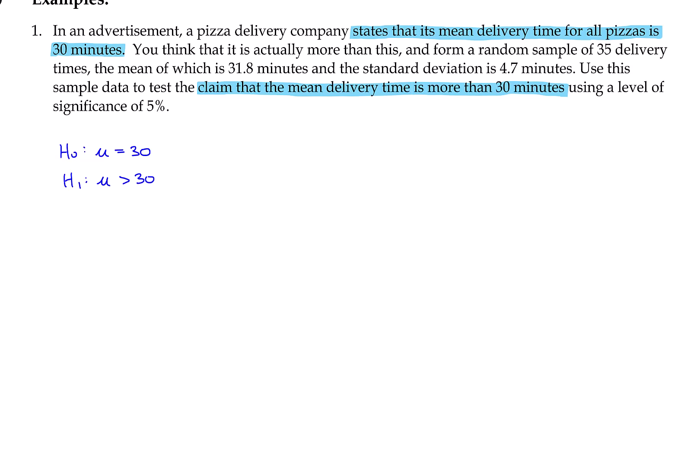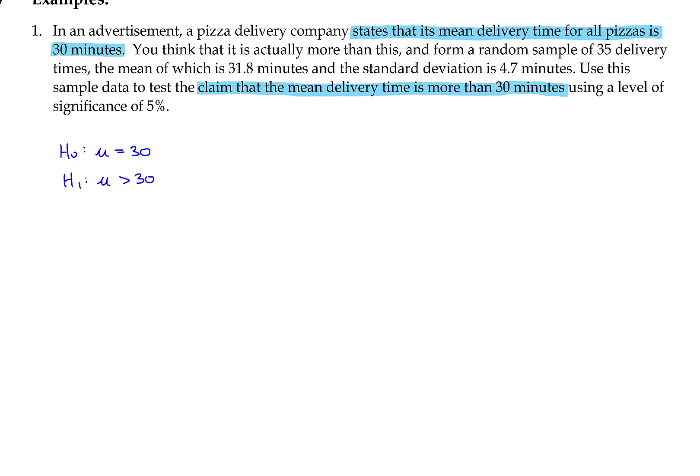We also have some sample data: a sample of 35 delivery times, a sample mean of 31.8 minutes, and a standard deviation of 4.7 minutes. Now 31.8 is larger than 30, but that's not enough to form a conclusion, because the standard deviation is 4.7 and this is only a sample of 35 delivery times — not an entire population — so we can't draw a conclusion just on the sample mean alone.